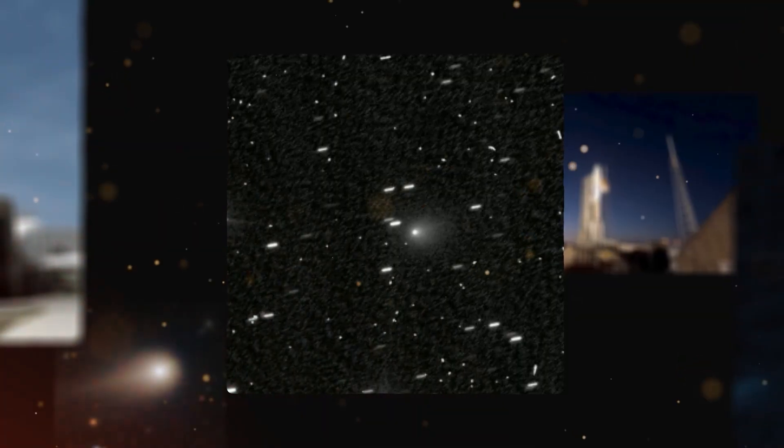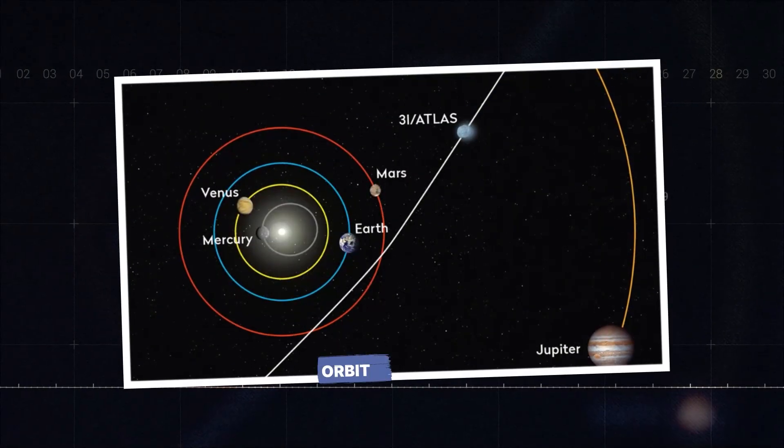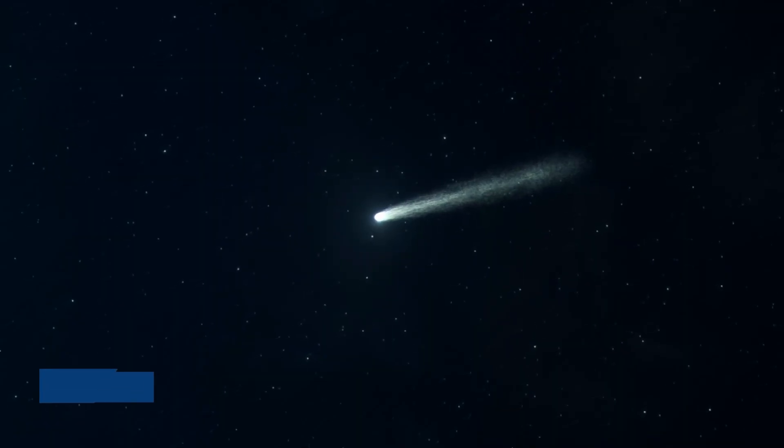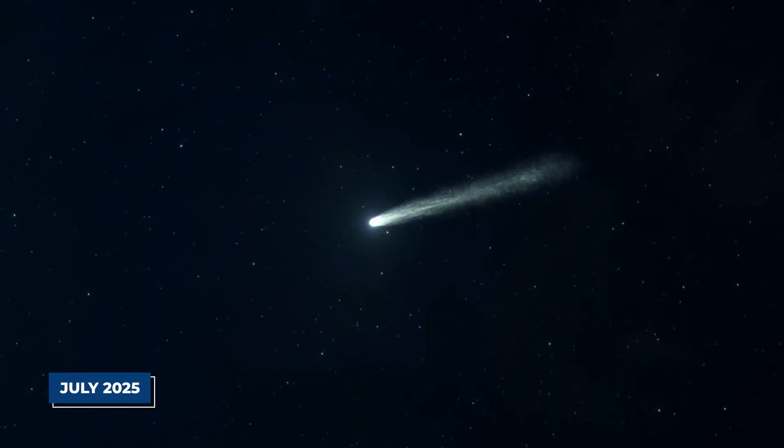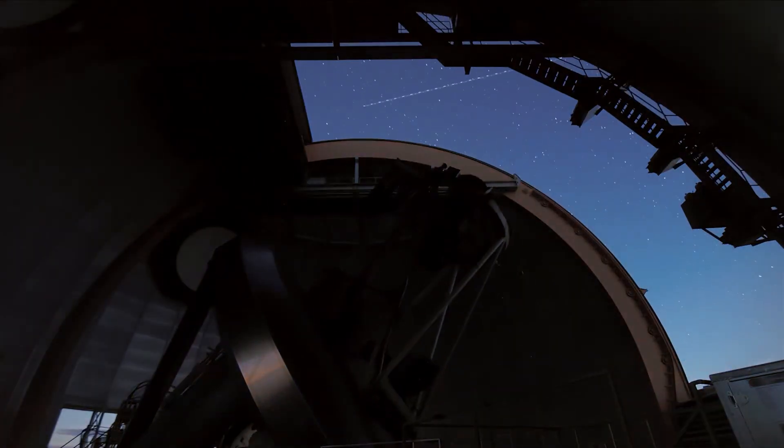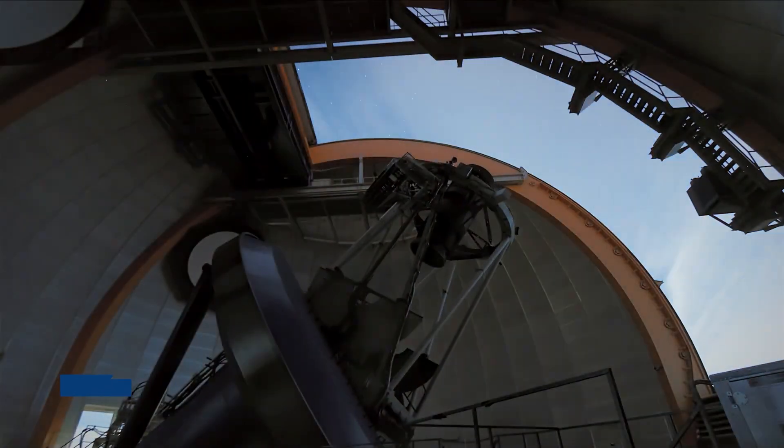This shift hints at a larger, unsettling truth about our space vulnerabilities. Close Encounter in Orbit. The discovery of 3I Atlas in July of 2025 sent waves through the astronomy community. Spotted by the Asteroid Terrestrial Impact Last Alert System, or Atlas.